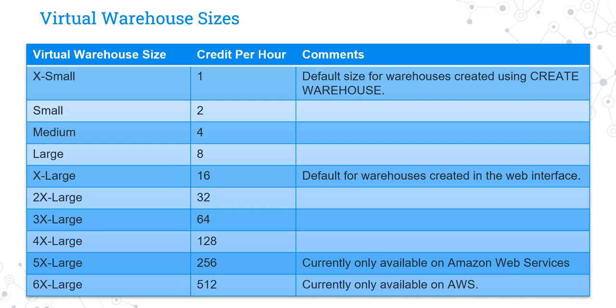Now let's go ahead and see some important notes about these virtual warehouses. The extra small warehouse is the default size if you create a warehouse using the command line. The extra large warehouse is the default size if you create a warehouse using the web interface. 5x large and 6x large are only available with the Amazon Web Services cloud provider. These stats may change in the future, but this is current information.